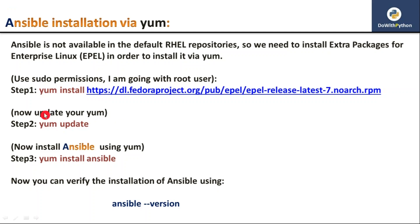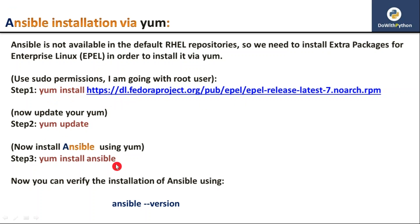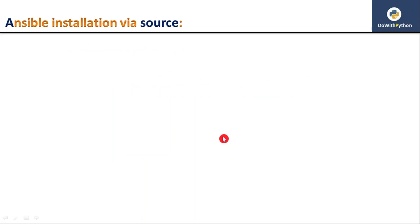So in summary, there are only three simple commands: first, add the EPEL repository to your local repository; then update YUM; then install Ansible. Finally, check whether it is installed or not using 'ansible --version'. This is a very simple and best way to install Ansible using the YUM command. There is one more way — the second method is Ansible installation via source.